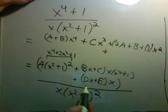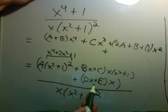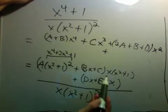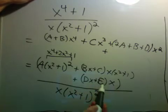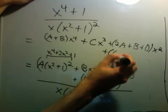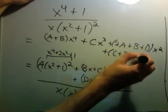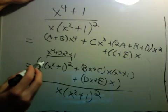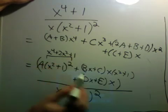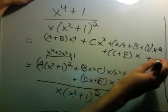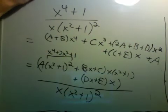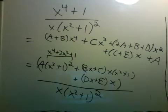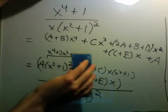And then, the only linear terms we have are Cx and Ex. So we have C plus E times x. And the only constant term is just A. So that's all of the numerator. Let me erase this and then put it over the denominator.